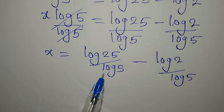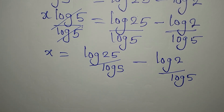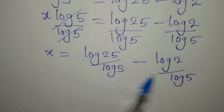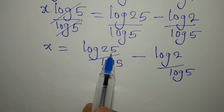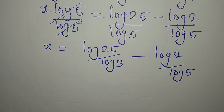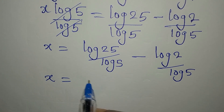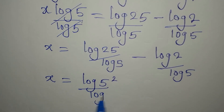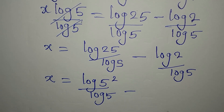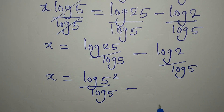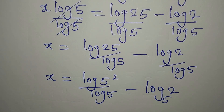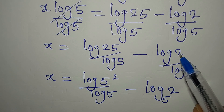I can apply change of base here, but I still want to simplify this. As I showed in one of my previous videos, 25 can be expressed in base 5, so x will be log of 5 squared divided by log 5 — which is this — then minus, if we apply change of base, we'll have log 2 to the base of 5. This 5 here becomes the base to the numerator.